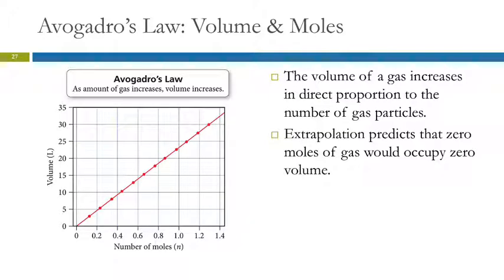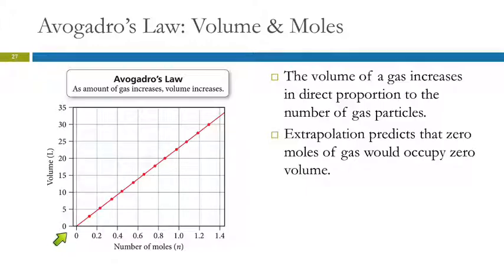Here's a graph of Avogadro's Law: as the number of moles of gas increases, the volume increases linearly. At zero moles of gas, the volume would be zero — that makes sense, since if there are no gas molecules, there's no volume.